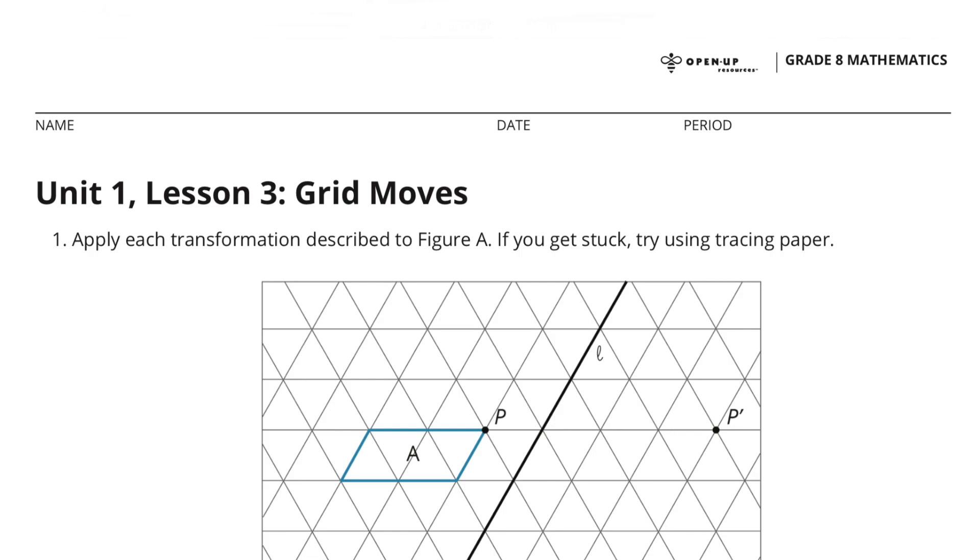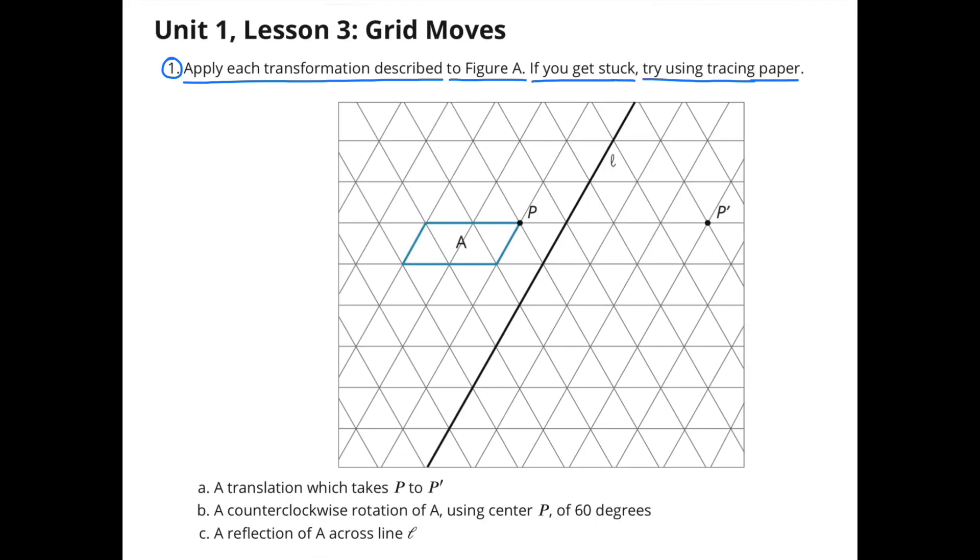Unit 1, Lesson 3: Grid Moves. Number 1. Apply each transformation described to figure A. If you get stuck, try using tracing paper.